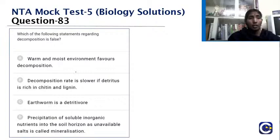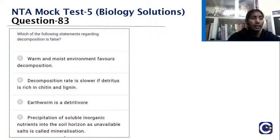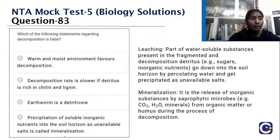Which statement regarding decomposition is false? Warm and moist environment favors decomposition — true. Decomposition rate is slower if detritus is rich in chitin and lignin — true. Earthworm is a detritivore — true. Precipitation of soluble inorganic nutrients into soil horizons as unavailable salts is called mineralization — this is false; that process is called immobilization, not mineralization. Decomposition involves fragmentation, catabolism, and leaching steps in biogeochemical recycling.